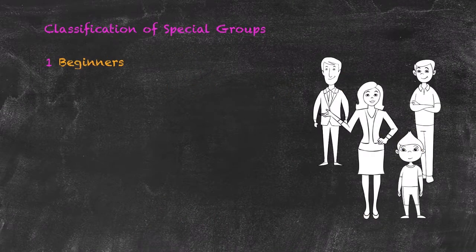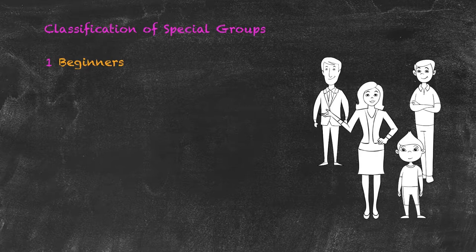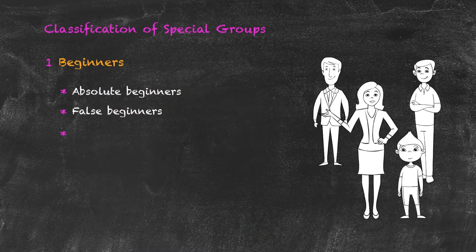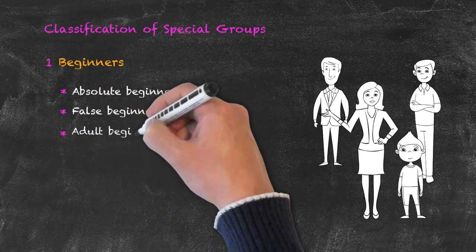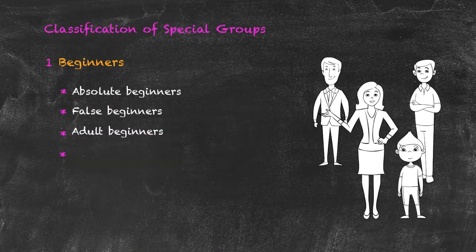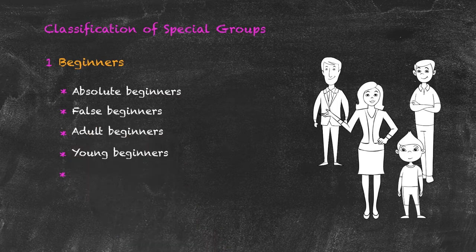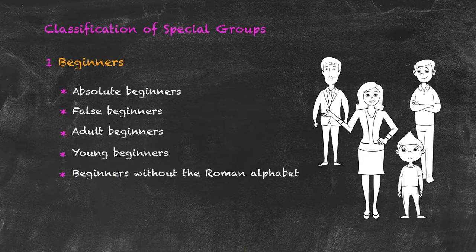The first thing to bear in mind when we're looking at the category of beginners is that beginners can be of any age. So really what we should do is to break this category down into a number of subcategories. Our first group we may call the absolute beginner. We could have what are called false beginners, another category may be the adult beginners and therefore the category of young beginners, and our final one — beginners without the Roman alphabet.